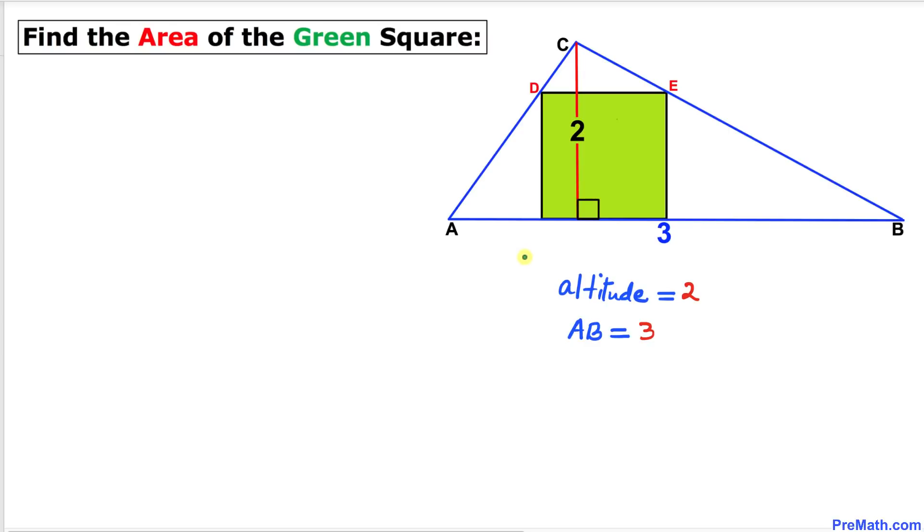In this figure, the altitude of the triangle is 2 units whereas the side length AB is 3 units, and now we are going to find the area of this green square.